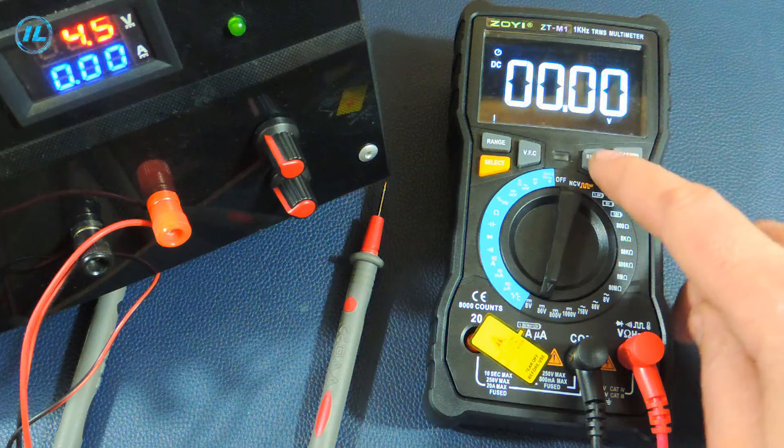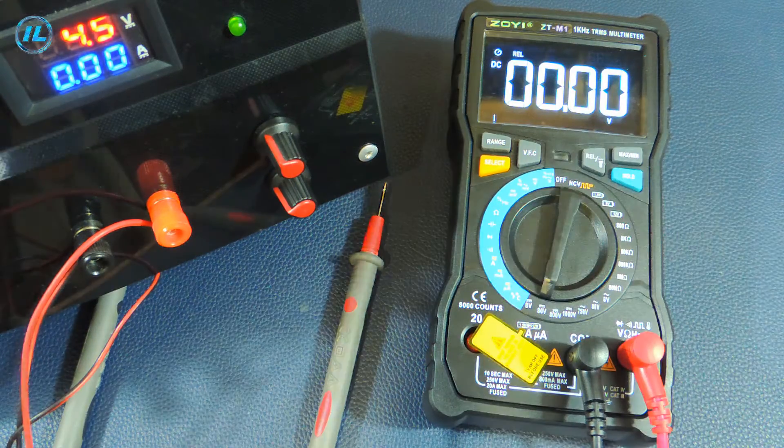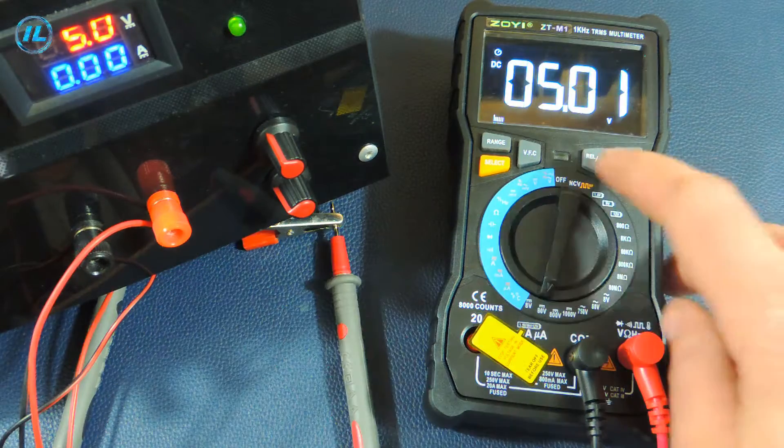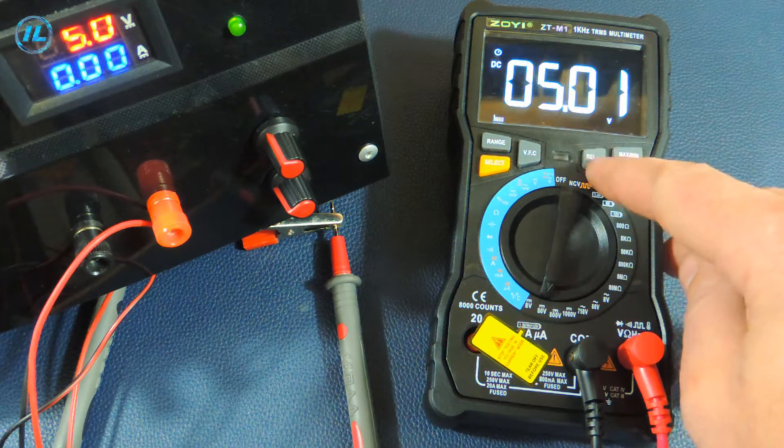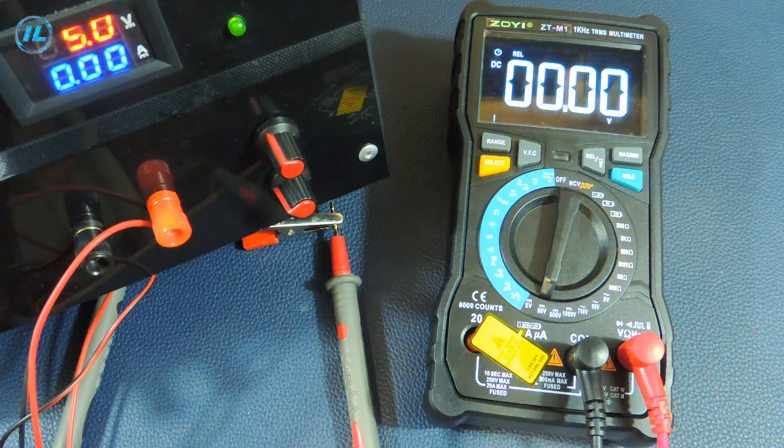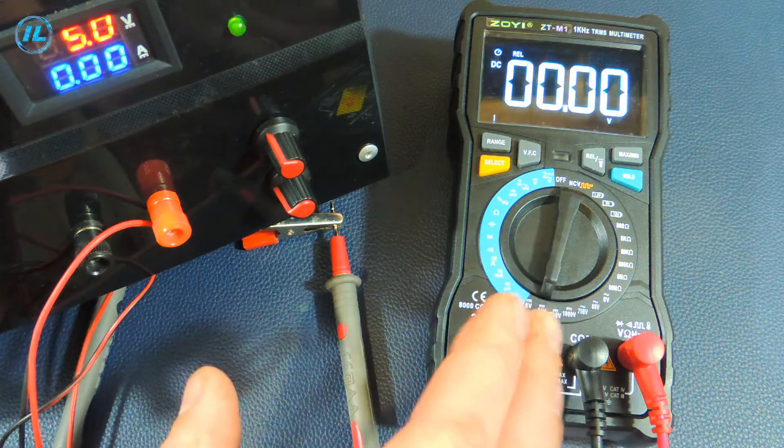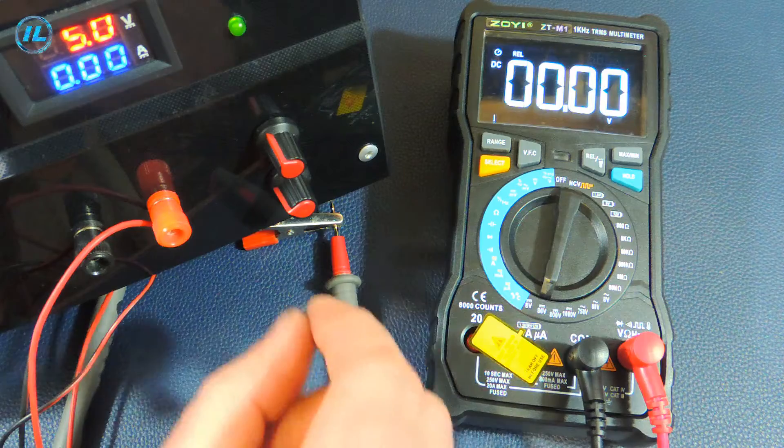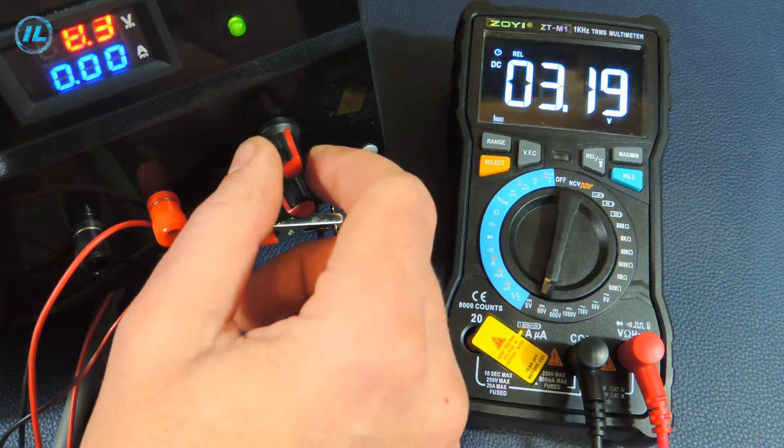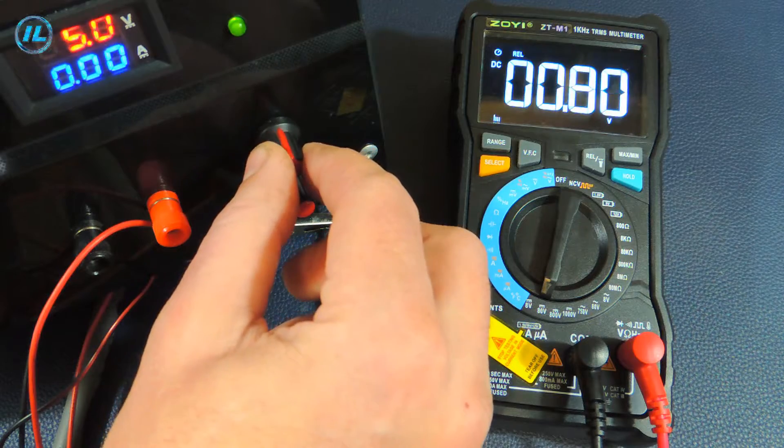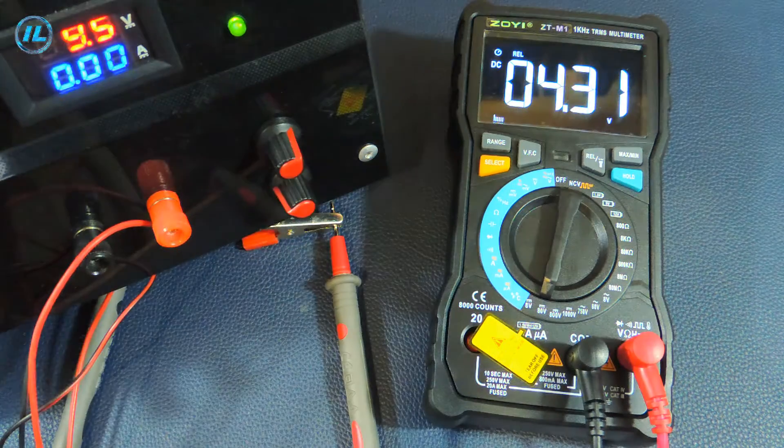Another function is the relative measurement mode. Now the output of the power supply is 5 volts. The device recorded this value. Now, when you press the REL button, all subsequent measurements of the multimeter will be made relative to 5 volts. That is, 5 volts will be the reference point for it. The relative measurement function in this multimeter also works without problems.